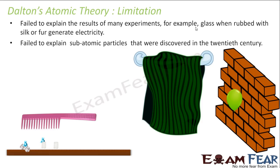Dalton's atomic theory also failed to explain subatomic particles discovered in the 20th century. Dalton's atomic theory told that the atom was the smallest particle and there cannot be anything inside it. But later in the 20th century, it was found that the atom was further divided into electron, proton, and neutron. So this theory could not explain those subatomic particles.